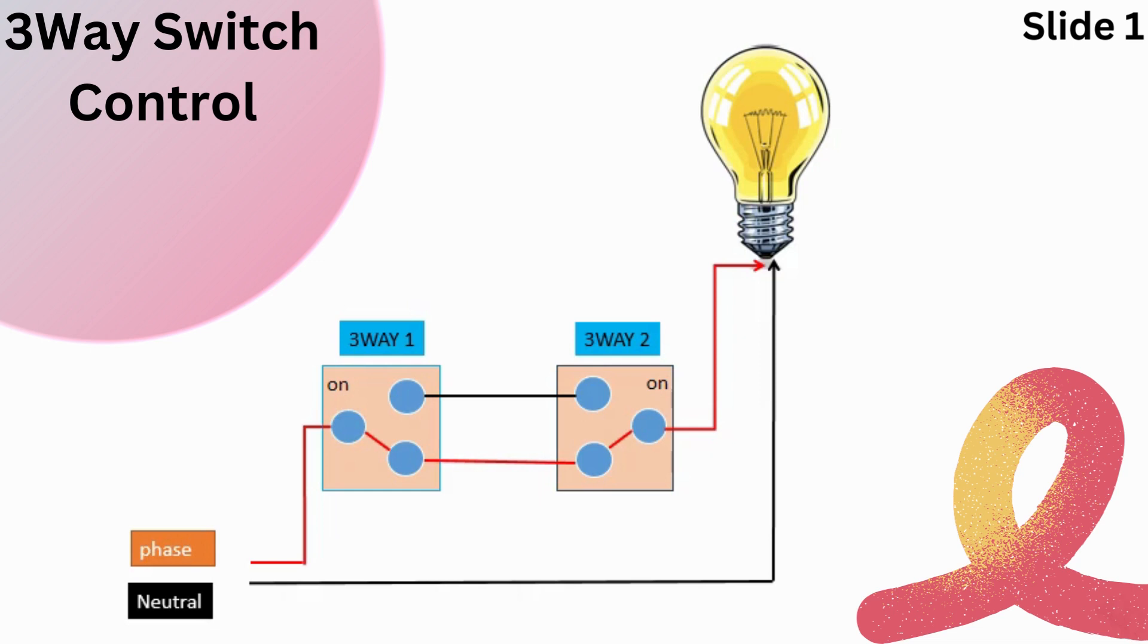When both switches are in the on position, the circuit is closed, allowing the electricity to flow from the power source, through the two switches, and to the light fixture, illuminating it.